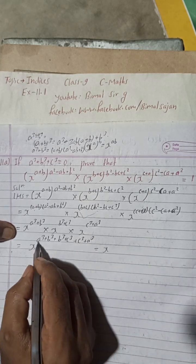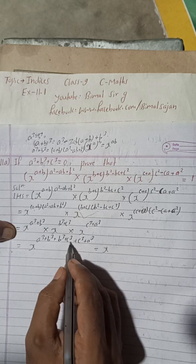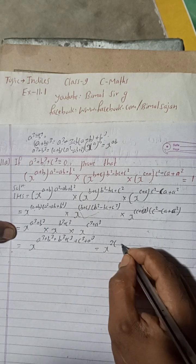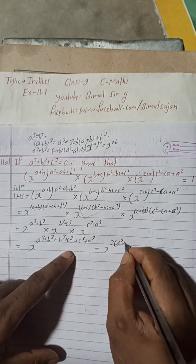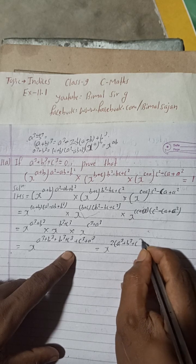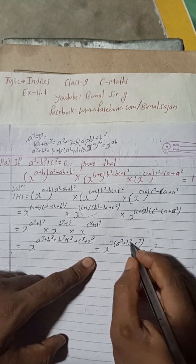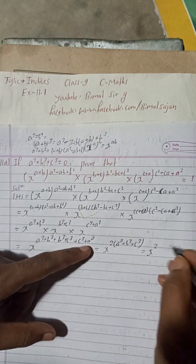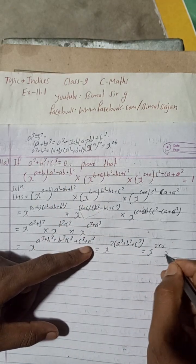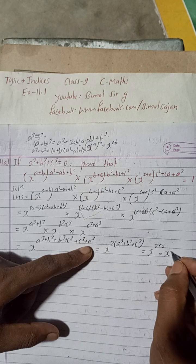And there are two a³, two b³, and two c³. So 2 take common and this will be here a³+b³+c³. This is equal to x to the power 2 and a³+b³+c³.